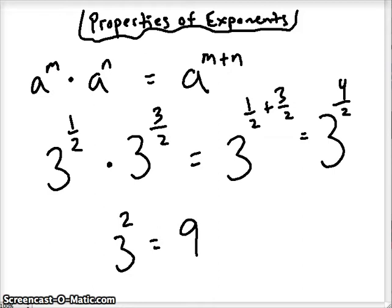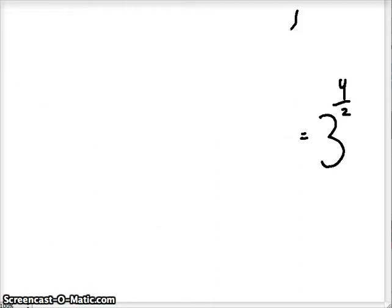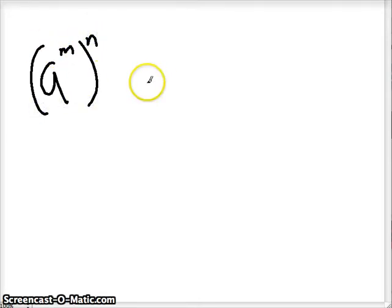All right. Our next property. Power of a power property here. And in this case, we say that we multiply those two exponents together.